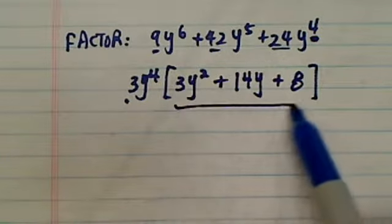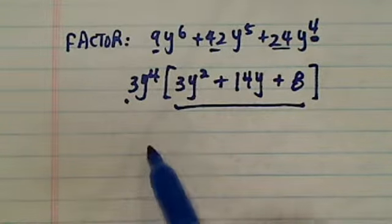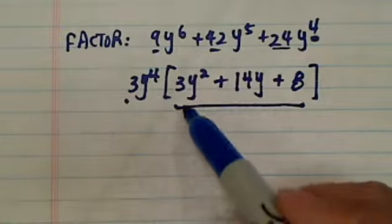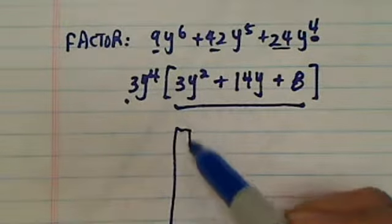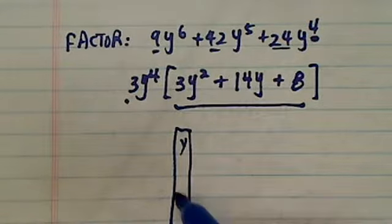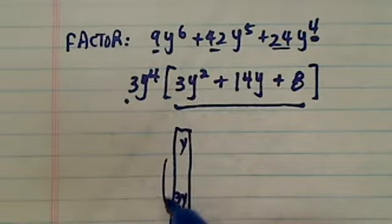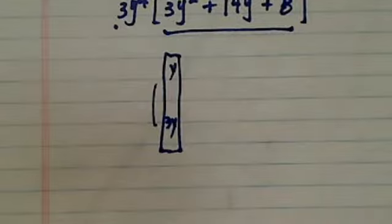So all you have to do is factor this one over here. The easiest thing you can do is use this vertical method. You have a y here, 3y here, so when you multiply them you have 3y squared.